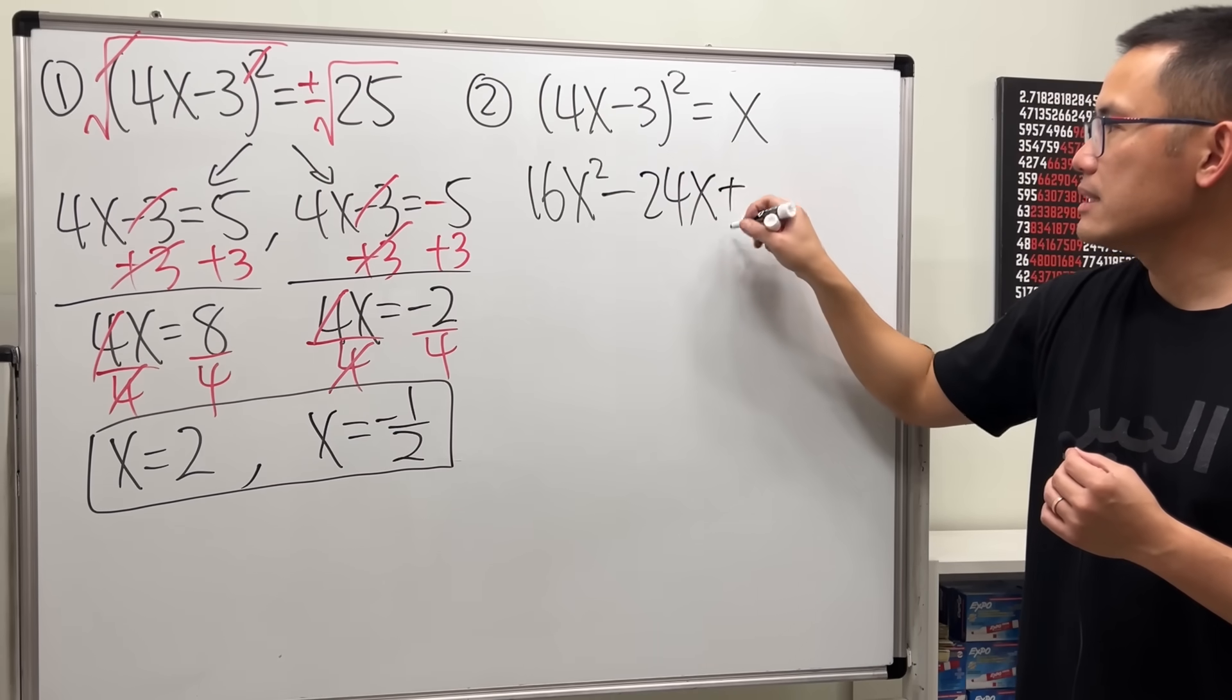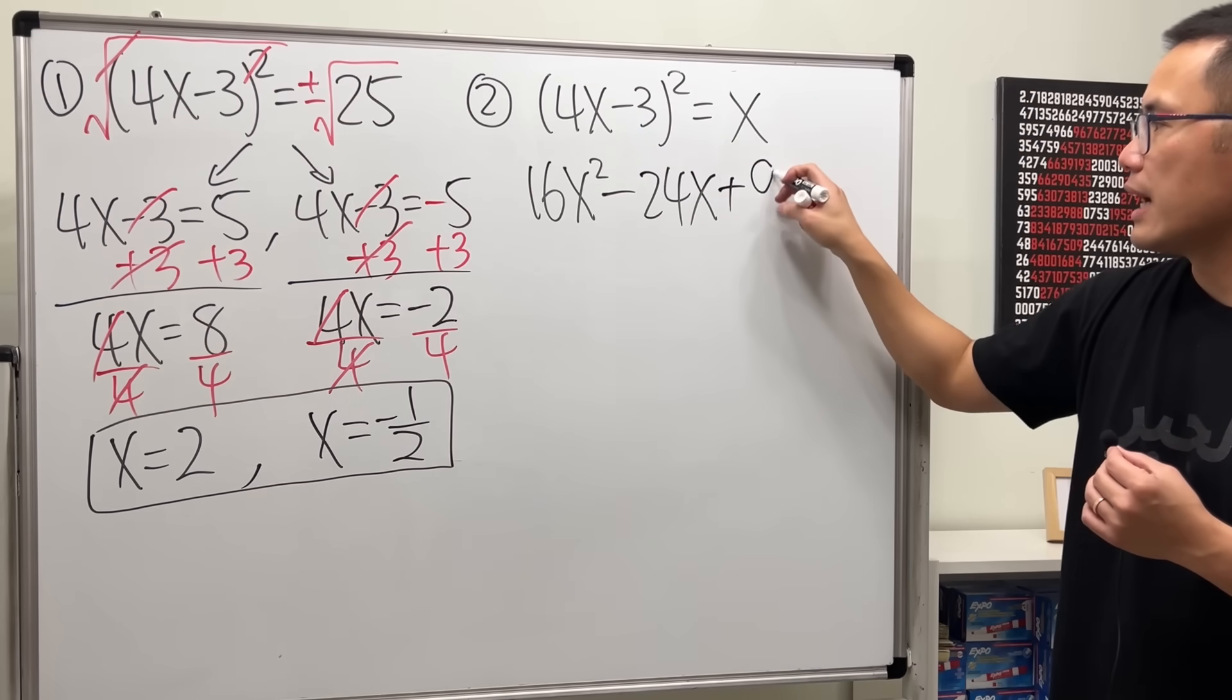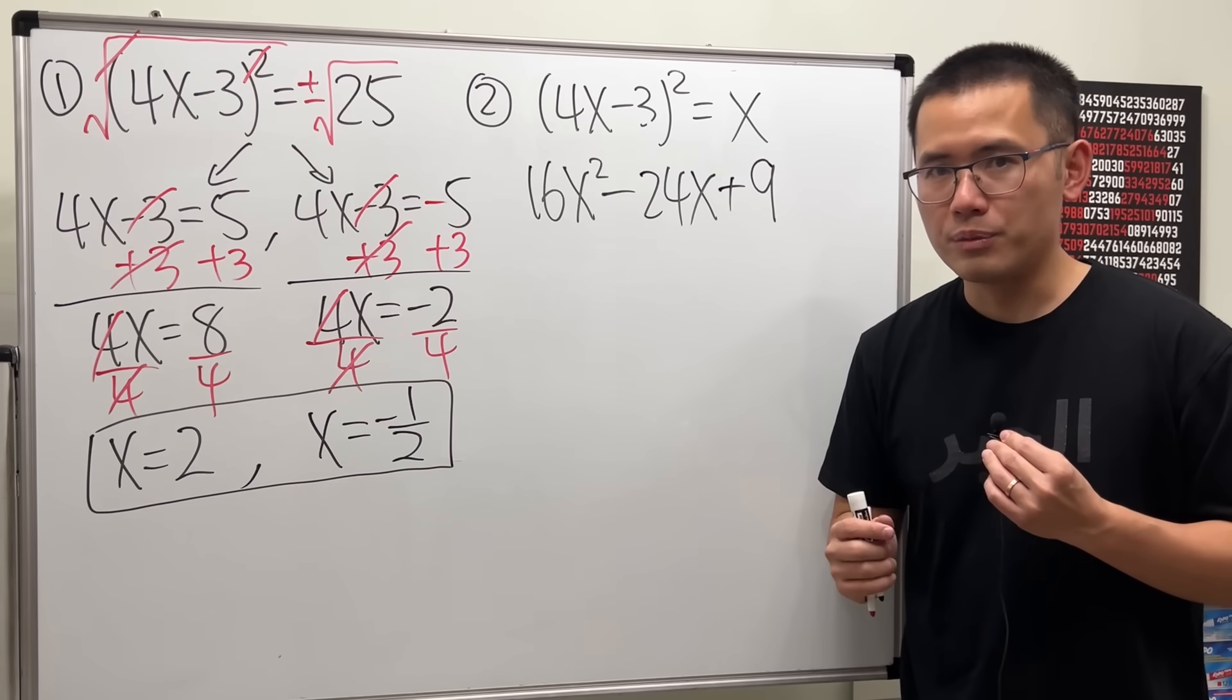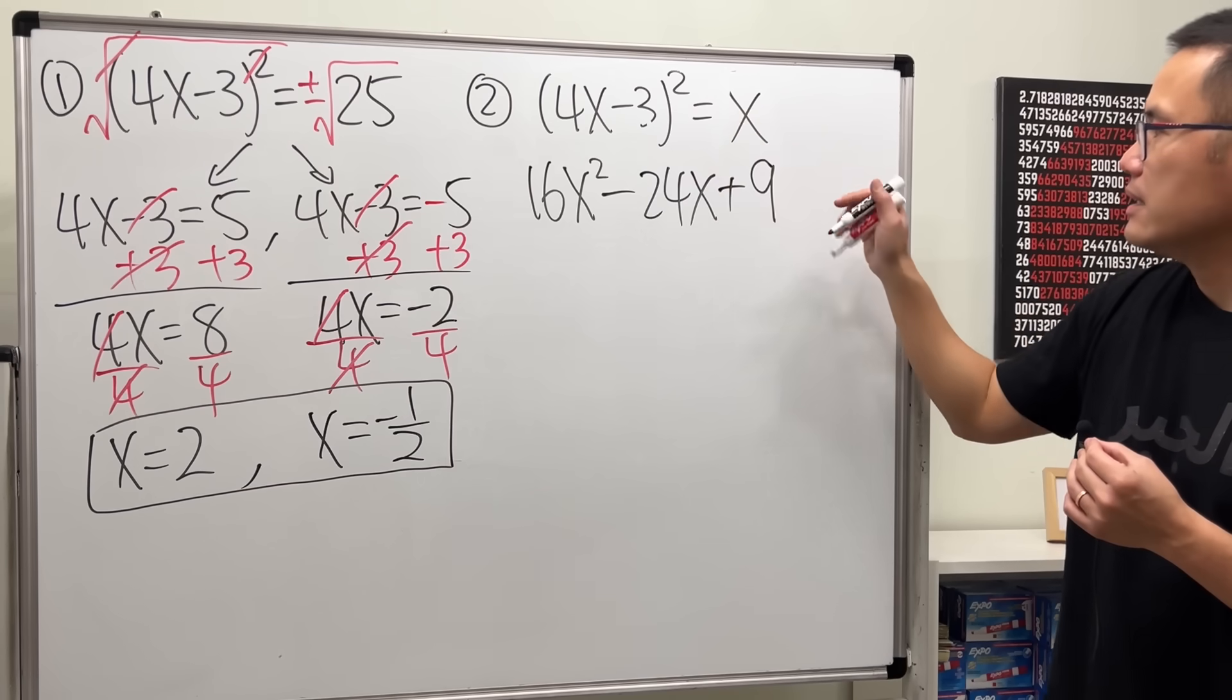And then also put down the x. Lastly, we add 3 squared, which is 9. So, special product. We use this a lot, so make sure you know the formula.